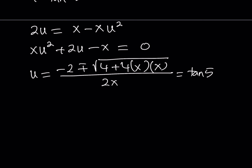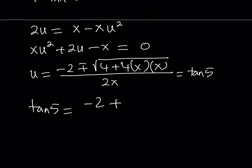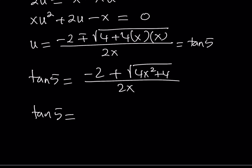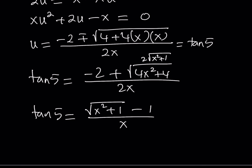So this is tangent 5. Notice that tangent 5 is positive. What is under the radical is positive because it's 4 plus 4x squared — always positive for real x. This expression can only be positive if we write it as negative 2 plus the square root of 4x squared plus 4. Taking out a factor of 2, I can write this as 2 times the square root of x squared plus 1. Dividing everything by 2, you get the square root of x squared plus 1 minus 1, divided by x.